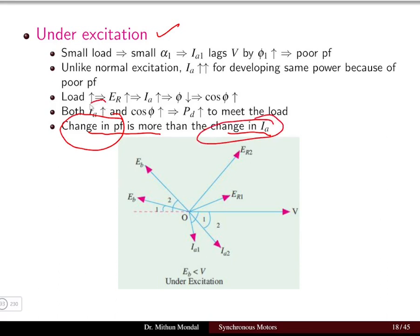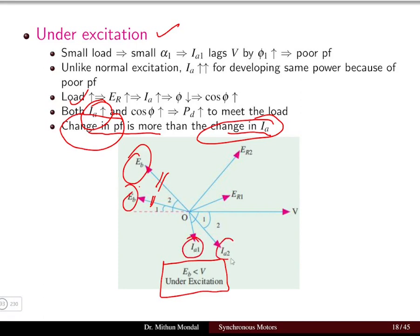In the phasor diagram under the under excitation case, where supply voltage is more than the back EMF, keeping Eb constant for both cases, Ia2 is more than Ia1 when the load increases. However, the change in angle is much more compared to the change in the magnitude of the current, indicating that the change in power factor dominates over the change in current magnitude.